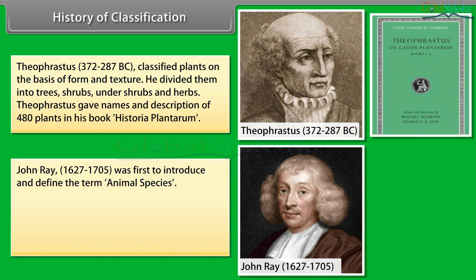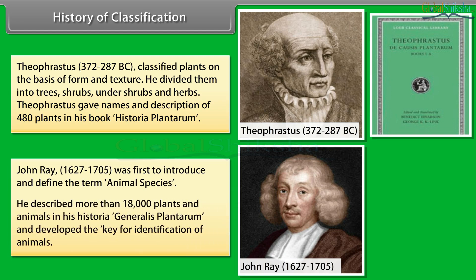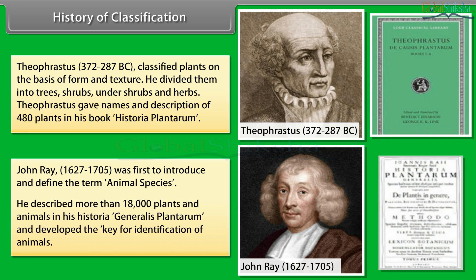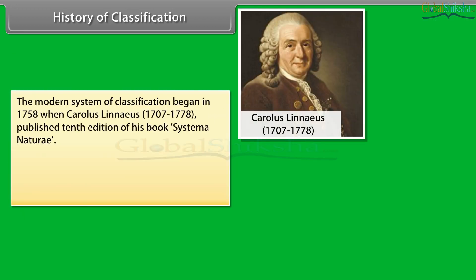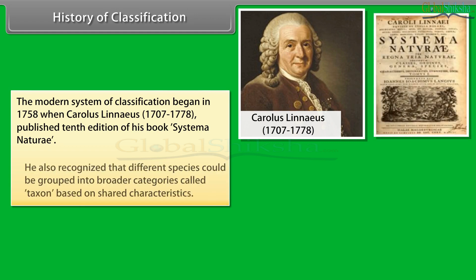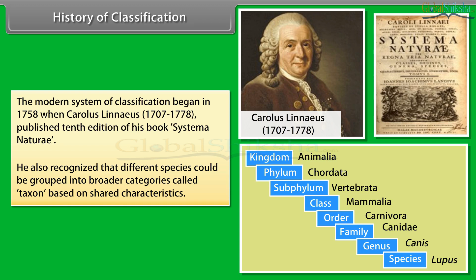John Ray, 1627 to 1705, was the first to introduce and define the term animal species. He described more than 18,000 plants and animals in his Historia Generalis Plantarum and developed a key for identification of animals. The modern system of classification began in 1758 when Carolus Linnaeus, 1707 to 1778, published the 10th edition of his book Systema Naturae.